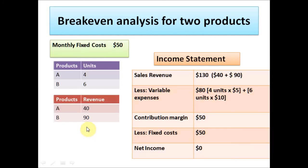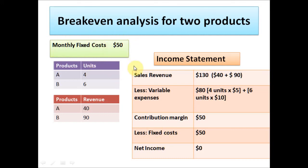Now we need to verify our calculations by inserting these numbers into the income statement. The total sales revenue is $130, which is $40 plus $90. We subtract variable expenses: 4 units times $5 for product A, plus 6 units times $10 for product B, giving total variable expenses of $80. So sales revenue of $130 minus variable expenses of $80 gives a contribution margin of $50. The monthly fixed cost is also $50, so $50 minus $50 gives a net income of $0. This confirms that at the breakeven point there is no profit or loss — our calculations are correct.